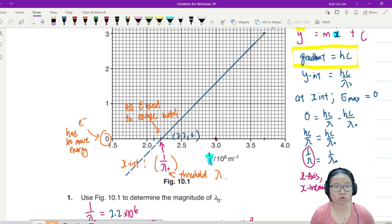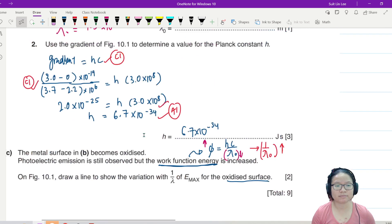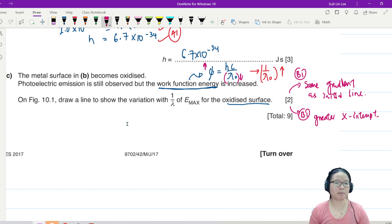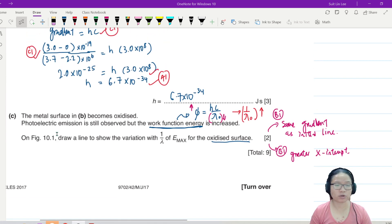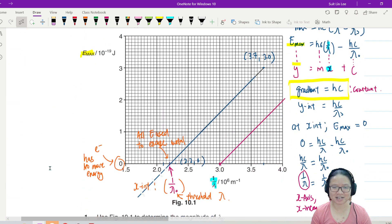And the second property that we should know is that the gradient has to be parallel. So something like this. How do I know it's parallel? Because gradient is equal to hc and hc is a constant. So the two marks here would be number 1, same gradient as the initial line. The second B1 would be greater x-intercept. As long as it's greater than 2.2 can already. It can be any number that is greater than. So I find photoelectric effect questions fairly nice and easy to do. No jump scare, no strange things, as long as you study the experiment and understand the phenomena.